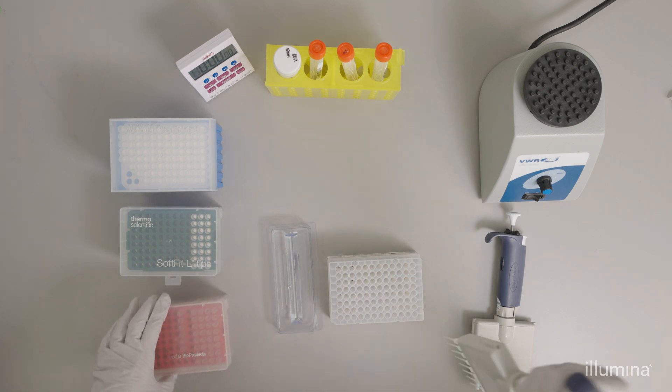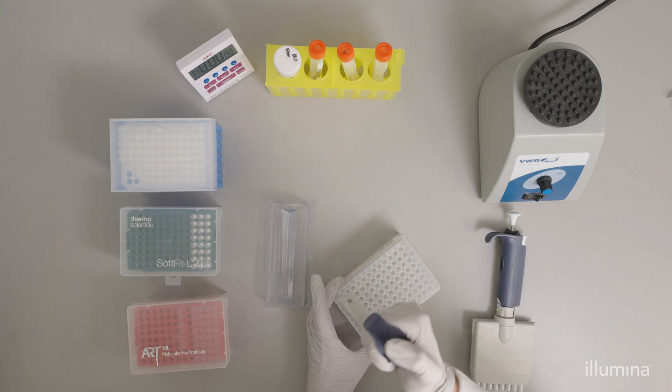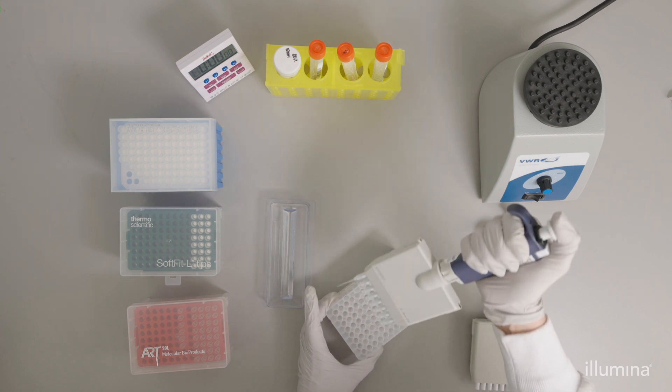After the final wash, use a pipette with fine tips, here we use a 20 microliter multichannel pipette, to remove any residual ethanol from the wells and check the bottom of the wells for any residual ethanol.